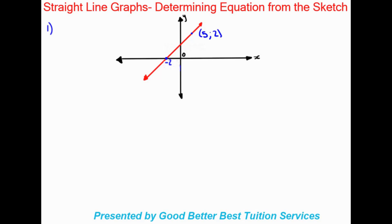Up until this point we've been determining the equation from different things — like where they gave us a gradient and some points, or in the case of the dual intercept method, two intercepts. But now we are almost working backwards, using the sketch that's provided to determine the equation of the straight line graph.